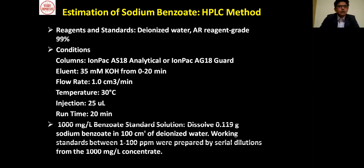A 1000 milligram per liter sodium benzoate standard solution is prepared by dissolving 0.11 grams of sodium benzoate in 100 cm³ of deionized water. Working standards between 1 to 100 ppm are prepared by serial dilutions from the 1000 milligram per liter concentrate.